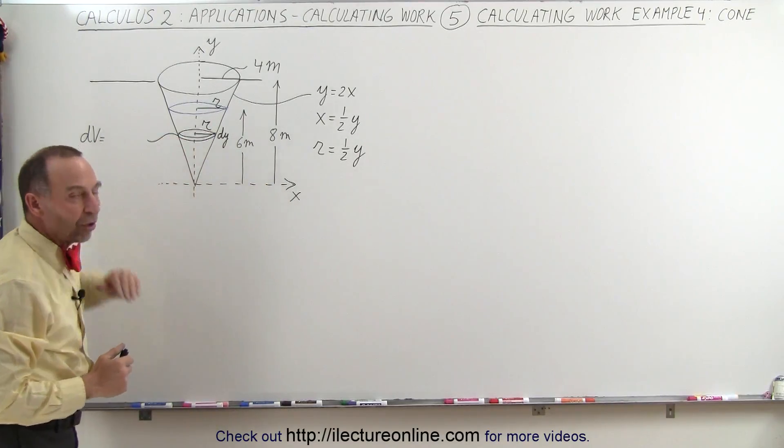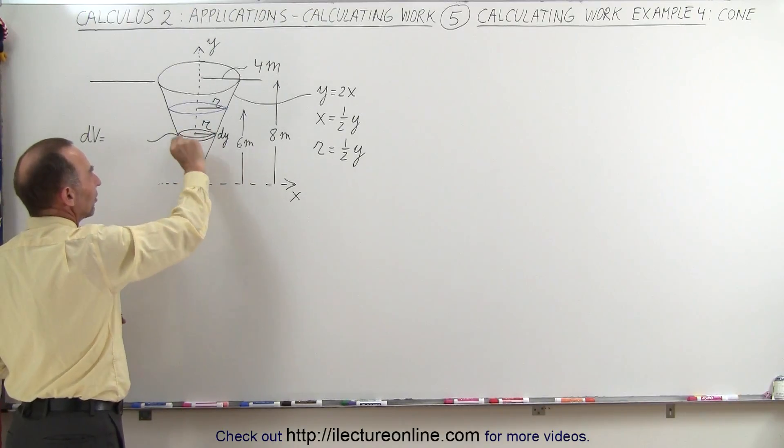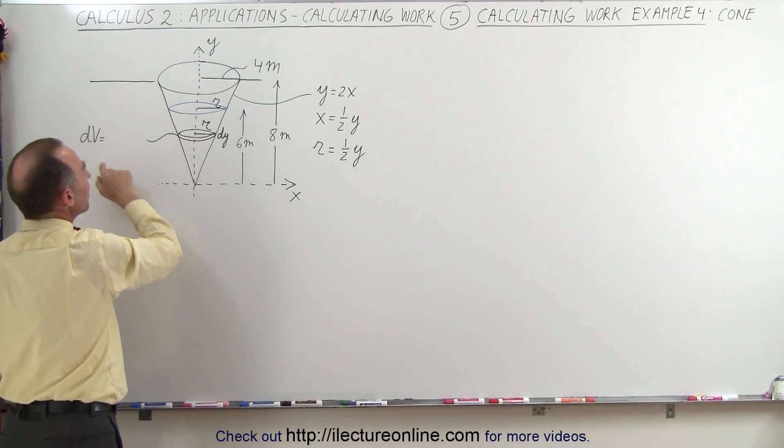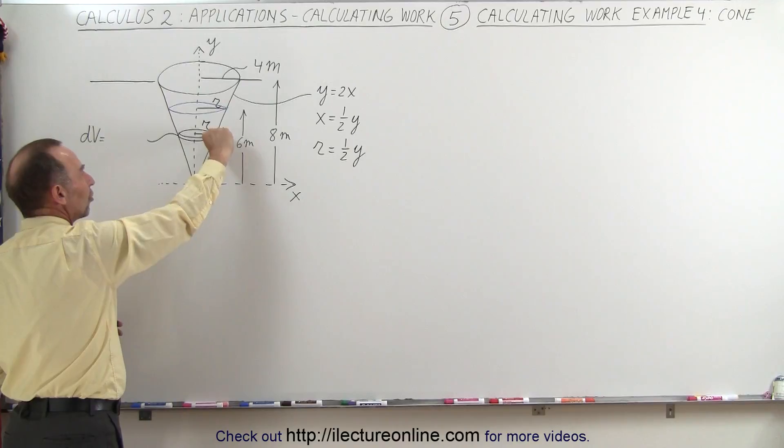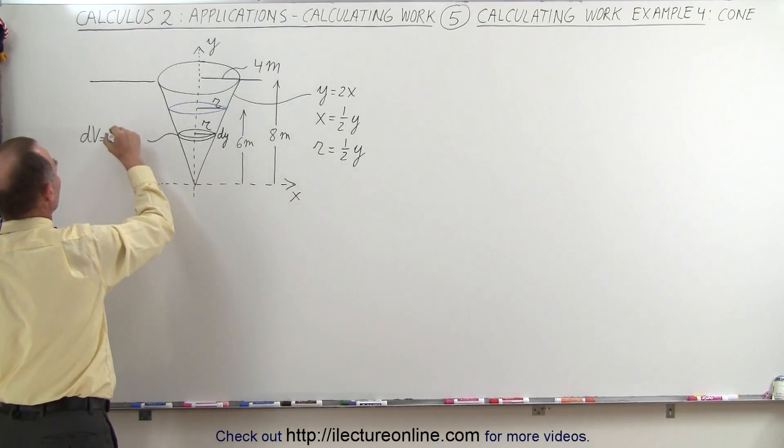Now we're going to slice a small little slice of that cone. Now this will be a small little volume of water. It's kind of flat disk. The volume of that disk will be called dv. It'll be the surface area times the height, which is a small little dy. The surface area will be pi r squared, so the volume becomes pi r squared times dy.